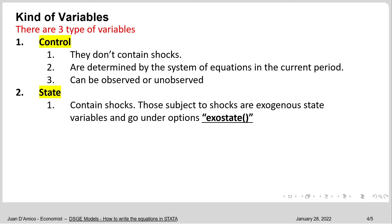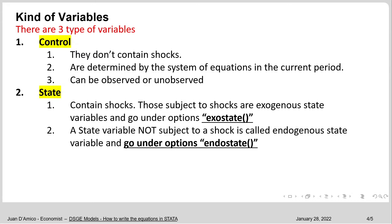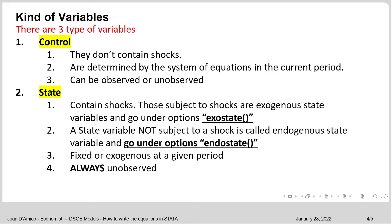State variables subject to shocks are exogenous state variables and they go under the exostate option. If you have a state variable that is not subject to a shock, then it's called an endogenous state variable and it goes under the endostate option. State variables are fixed or exogenous at a given period and they are always unobserved.